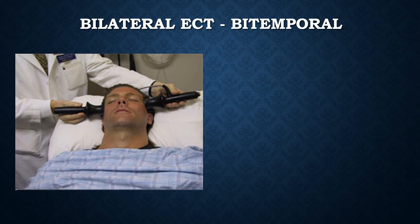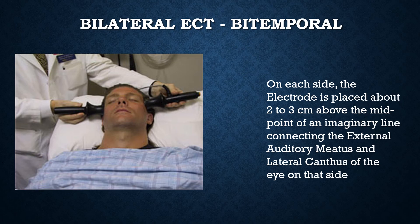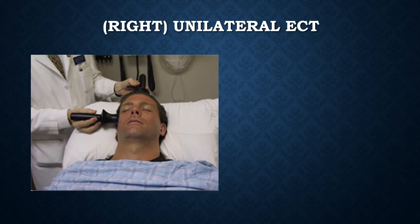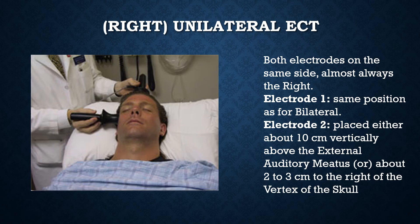In bitemporal bilateral ECT, on each side the electrode is placed about two to three centimeters above the midpoint of an imaginary line connecting the external auditory meatus and the lateral canthus of the eye. In right unilateral ECT, one electrode is placed in the same position as for bilateral ECT, and the second electrode is placed either about 10 centimeters vertically above the external auditory meatus or about two to three centimeters to the right of the vertex of the skull. Both electrodes should be on the right side.